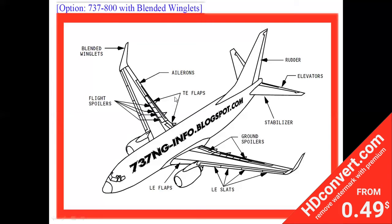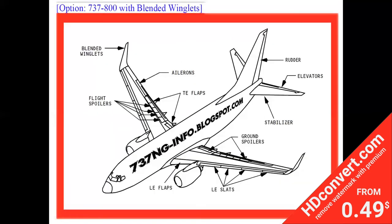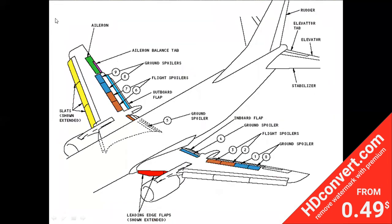The Boeing 737-800 includes all primary, secondary, and auxiliary flying controls. This picture gives a clear idea of all primary, secondary, and auxiliary controls, including leading edge slats, Kruger flaps, aileron, elevator, rudder, balance tabs, ground spoilers, flight spoilers, outboard and inboard flaps, elevator tabs, horizontal stabilizer, vertical stabilizer.